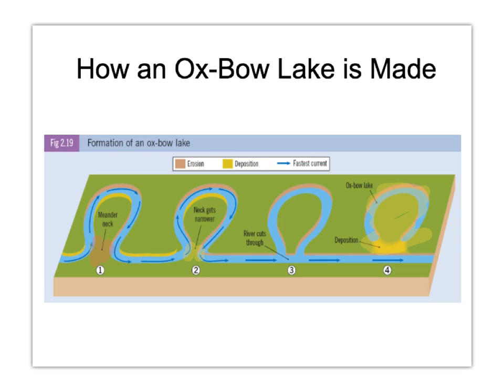This is a good one to learn because if you've learned a meander well, this is just the next stage. The oxbow lake is a meander that over time has caused so much erosion at the neck that the neck gets smaller and smaller. Eventually — perhaps through a flood or when the river has more volume or velocity — it erodes straight across and takes the shorter route, leaving a small lake which is the oxbow lake.